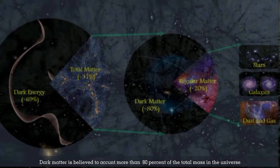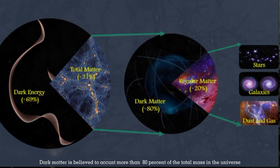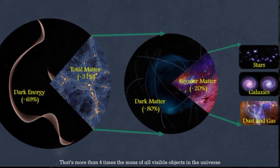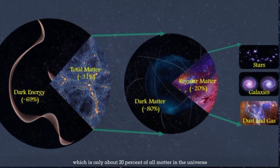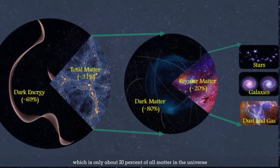Dark matter is believed to account for more than 80% of the total mass in the universe. That's more than four times the mass of all visible objects, which make up only about 20% of all matter in the universe.